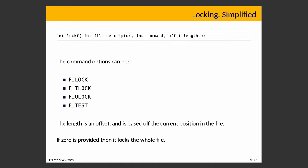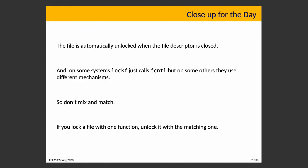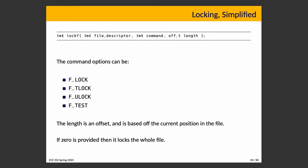It's too late to change this inconsistency because it's in the specification and programs rely on it — that's just life. The length argument is an offset based on the current position of the file. If zero is provided, it means lock the entire file — so you don't have to seek back to the beginning. Another nice thing about lockf is that the file is automatically unlocked when the file descriptor is closed, which is convenient.